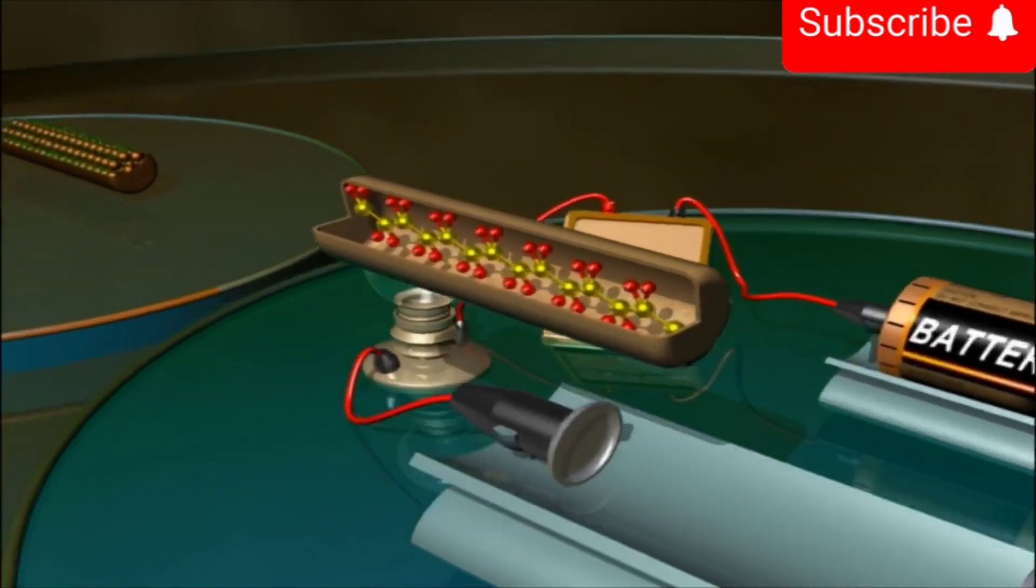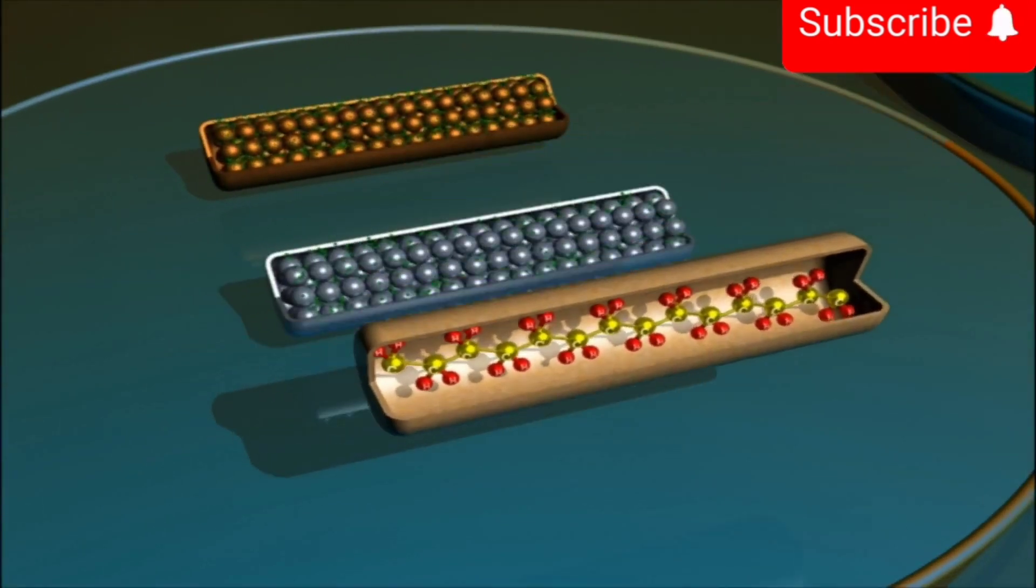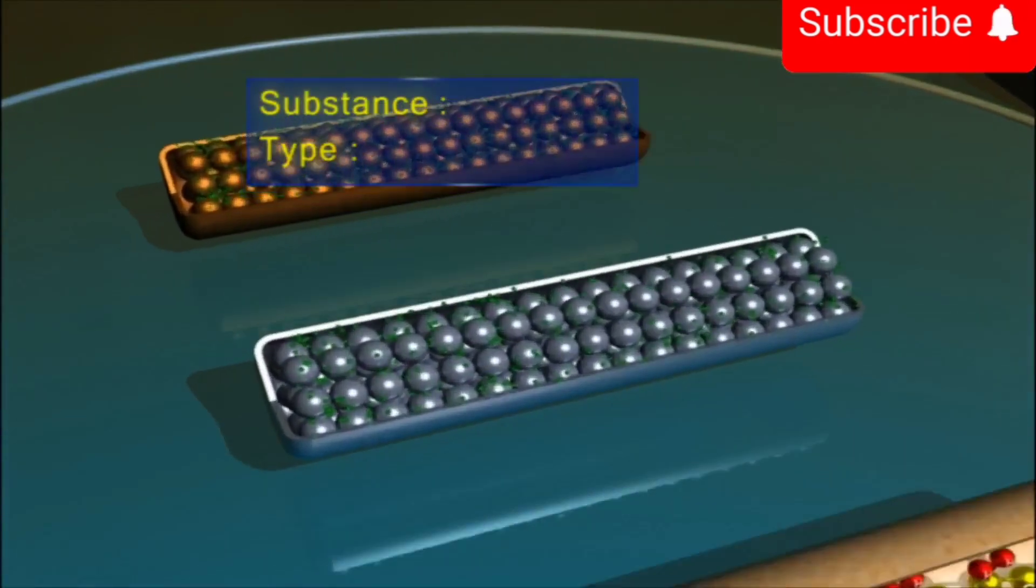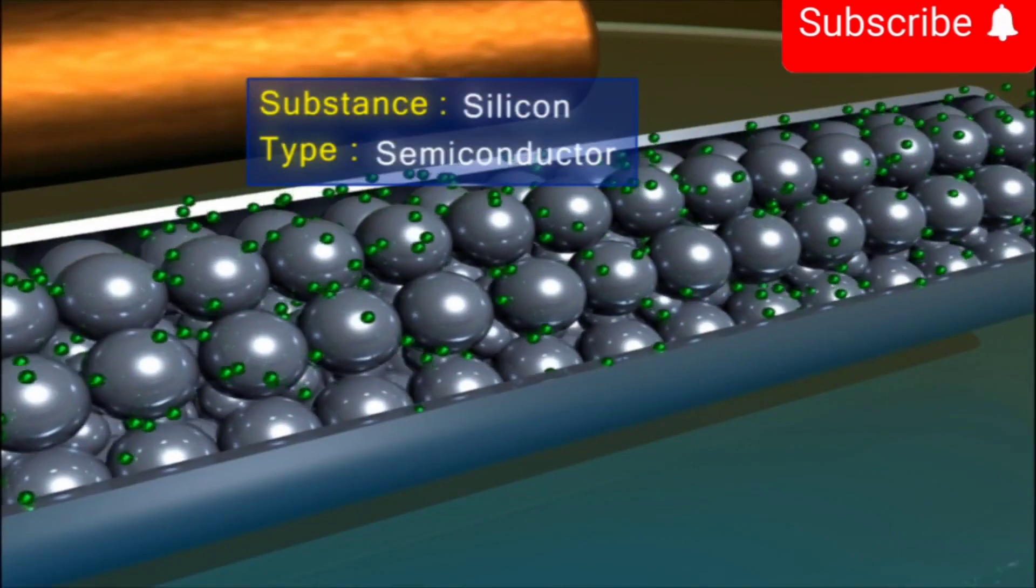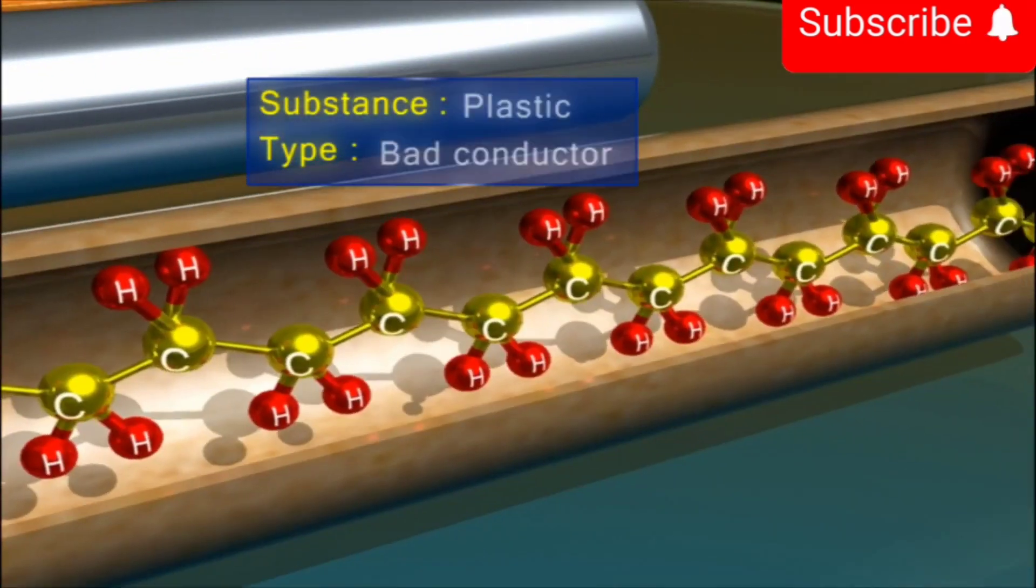Depending on the amount of free electrons in a substance, we can classify them into good conductors, semiconductors, and bad conductors.